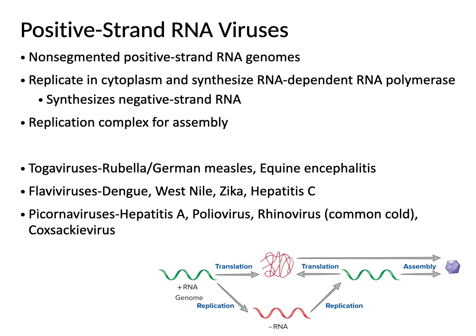For positive-strand single-stranded RNA viruses, these can be non-segmented or segmented depending on the virus. Because it is a positive strand that can synthesize protein, you can have immediate translation from the positive-strand RNA genome. The complement RNA strand is synthesized and used for genome replication. Examples of positive-strand RNA viruses include rubella (German measles), equine encephalitis, dengue, West Nile, Zika, hepatitis C, hepatitis A, polio, rhinovirus (the common cold), and Coxsackie virus.